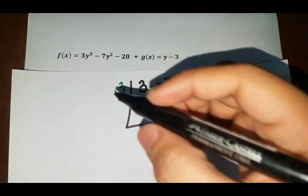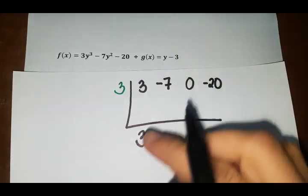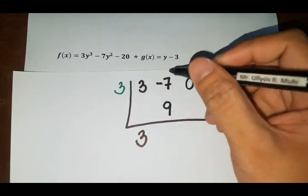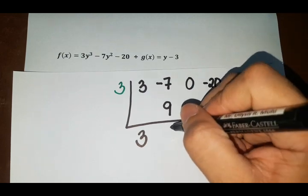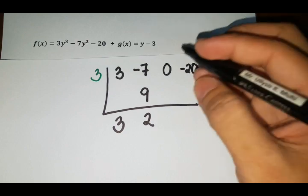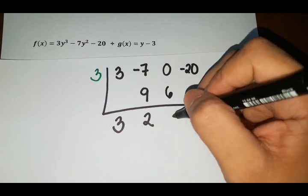So same thing. So times and add. So bring down 3. 3 times 3, it's 9. So negative 7 plus 9, that's 2. Okay. So 2 times 3, 6.